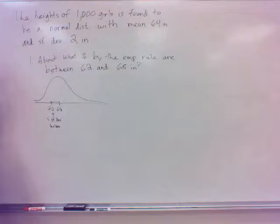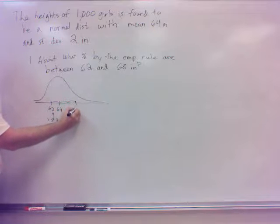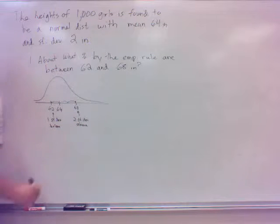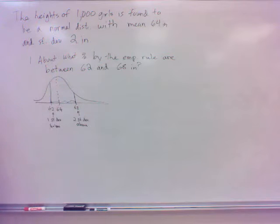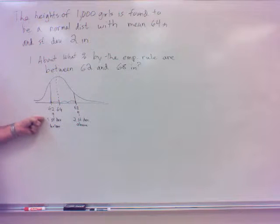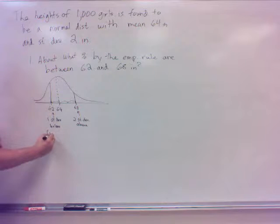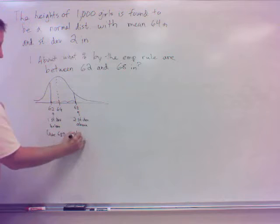What about sixty-eight? To get to sixty-eight from the mean of sixty-four, I go to sixty-six, then to sixty-eight — that's two standard deviations above. Now I need to split this up. One standard deviation corresponds to sixty-eight percent from the empirical rule, and two standard deviations corresponds to ninety-five percent. I'll split it right down the middle.